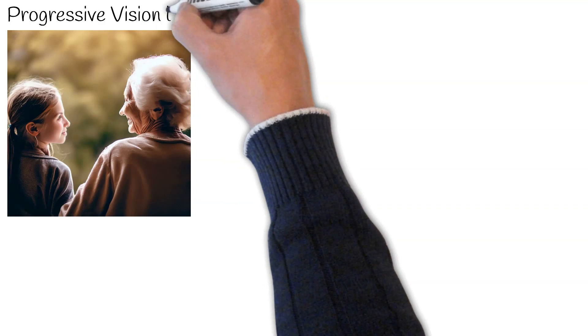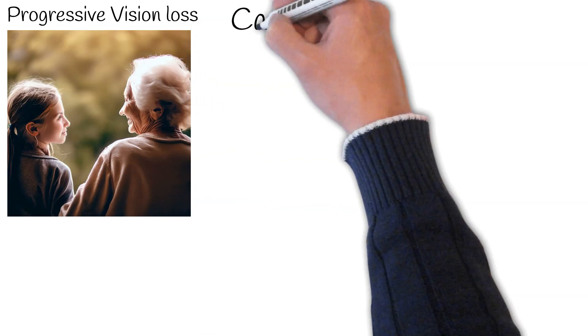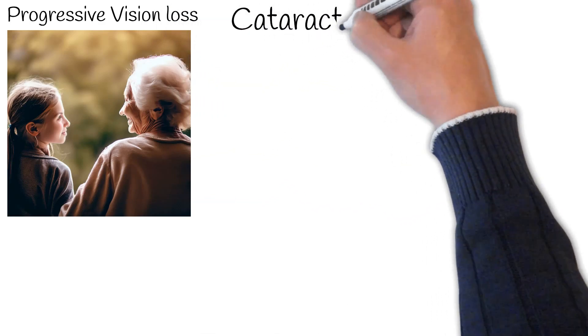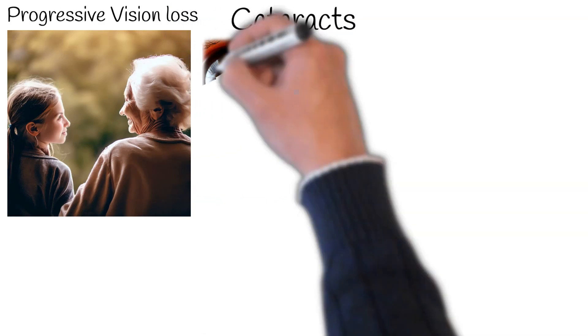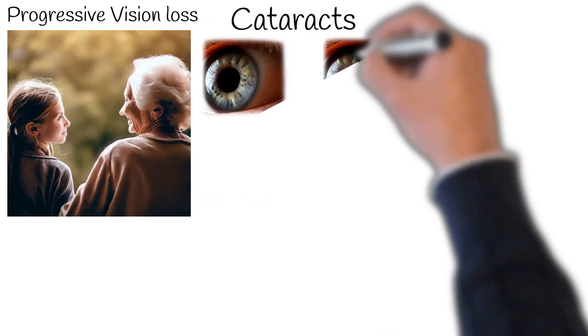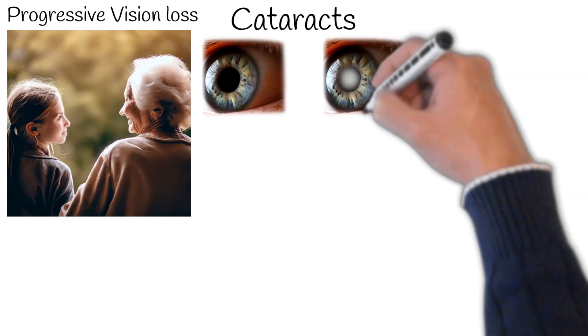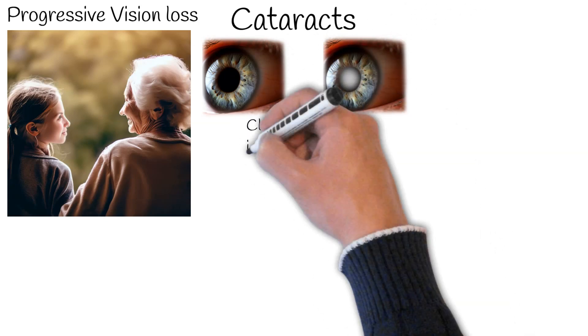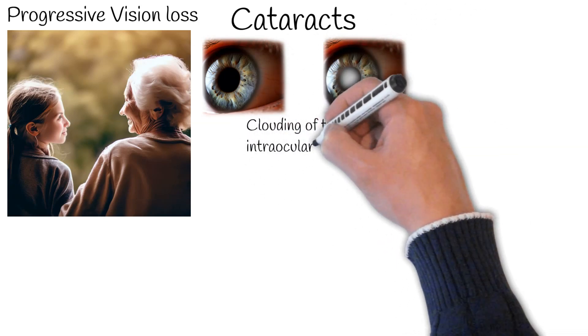As we journey through life, our visual prowess does not remain static. Aging, even in the healthiest of individuals, induces a natural decrement in visual acuity. We will discuss diseases which commonly cause progressive loss of eyesight.